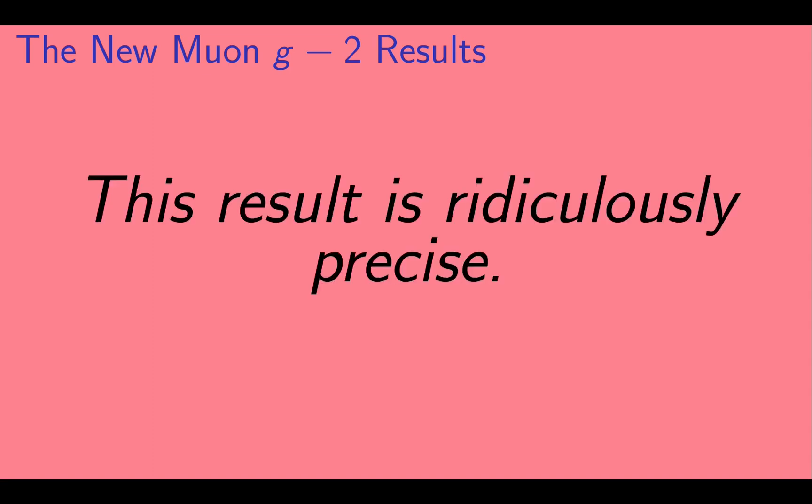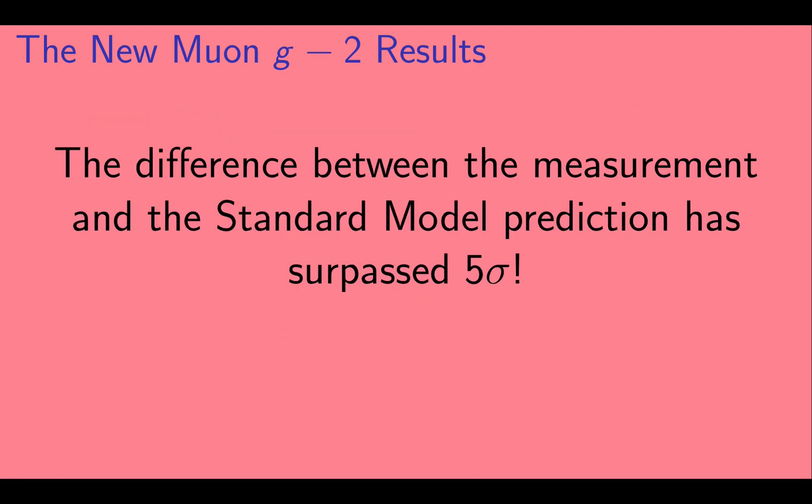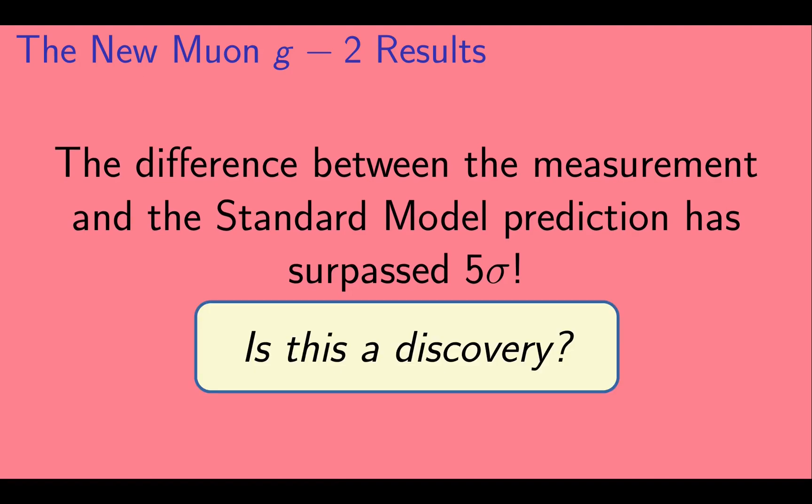Okay, let's mention a couple of things about this result. The first is that this result is ridiculously precise. The error bar on the experimental result is the number in parentheses. We should just take note of how many significant figures this result has, and that the error bar is only in the last two digits. Second, the difference between the measurement and the standard model prediction has surpassed 5 sigma. Is this a discovery?